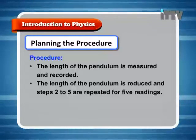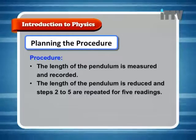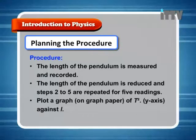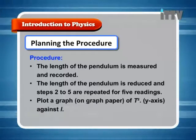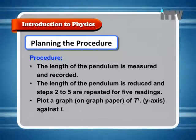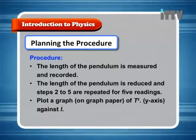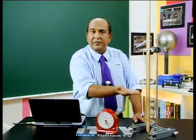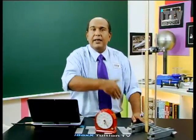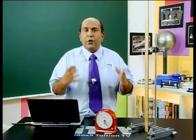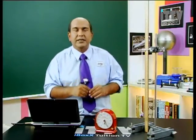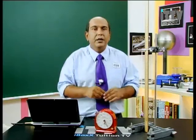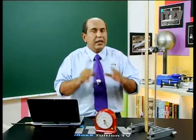The length of the pendulum is reduced and steps 2 to 5 are repeated for 5 readings. We then plot a graph on graph paper of t-squared on the y-axis against the length. We repeat the experiment for different lengths, shortening the pendulum by 5 centimeters each time. For accuracy, we repeat each reading to get an average.